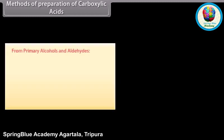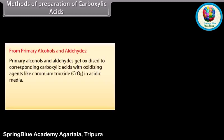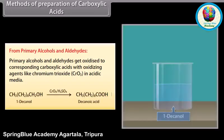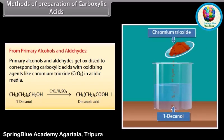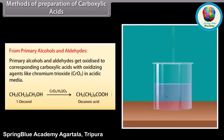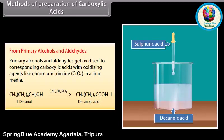Methods of preparation of carboxylic acids. From primary alcohols and aldehydes: primary alcohols and aldehydes get oxidized to corresponding carboxylic acids with oxidizing agents like chromium trioxide in acidic media. 1-Decanol reacts with chromium trioxide in acidic medium and forms decanoic acid.